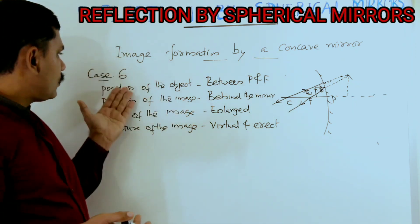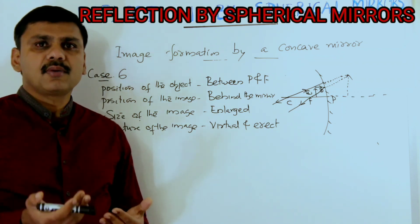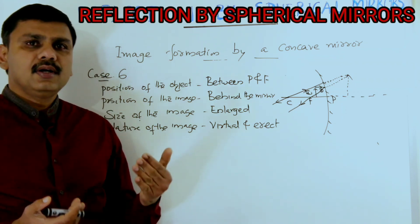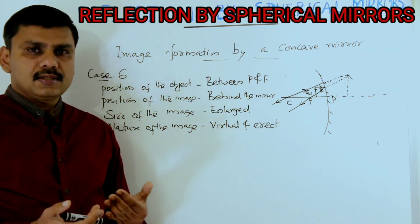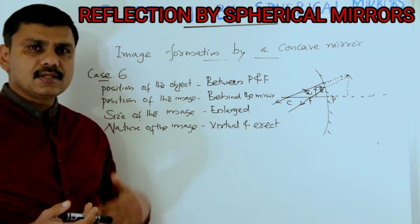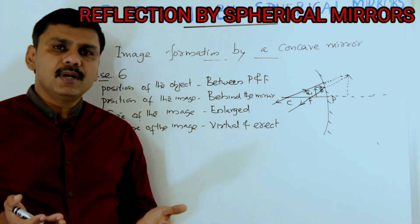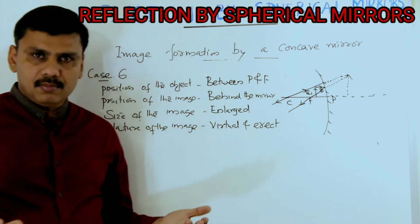So from case one to six, these are the formations of images — the nature of the image and the size of the image formed by the concave mirror.